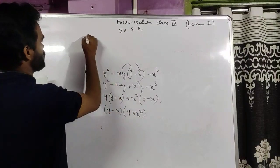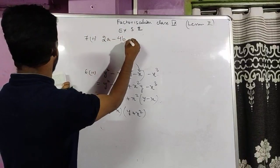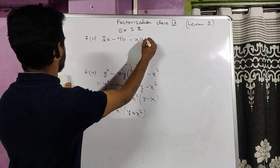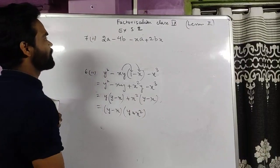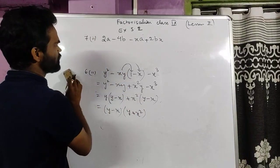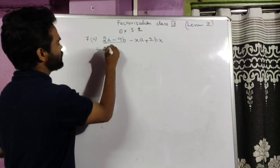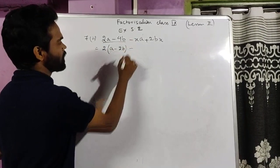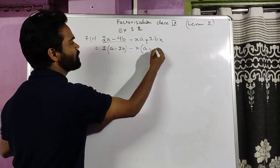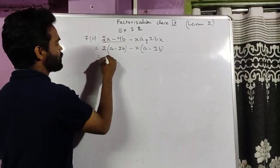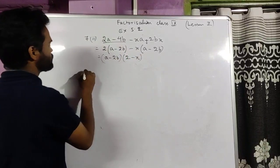Sum 7 part 2: 2a minus 4b minus xa plus 2bx. It is already clearly grouped. Taking 2 common from the first two: 2(a minus 2b). Taking minus x common from the last two — the sign changes — giving minus x(a minus 2b). Both groups have (a minus 2b) as common, and what is left is (2 minus x). So it is factorized as (a minus 2b)(2 minus x).